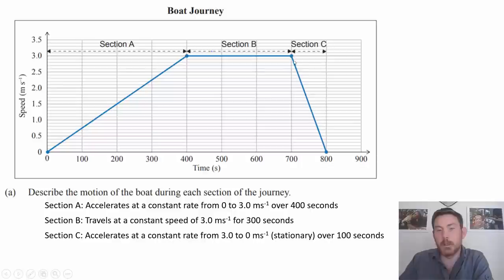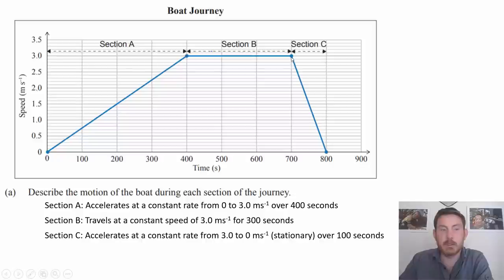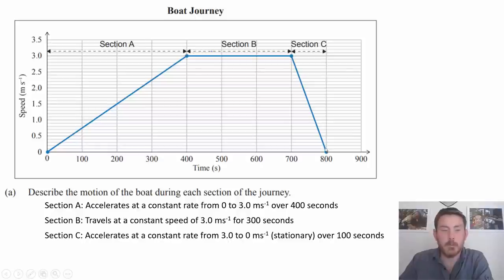In the last section we've got the line decreasing from three to zero, and because that's a change in speed or velocity, the object is accelerating or decelerating. In physics, acceleration is a change in speed or velocity — that distinction is more important at level two and beyond. So in section C, the boat accelerates at a constant rate from three to zero meters per second over 100 seconds, so it comes to a stop.